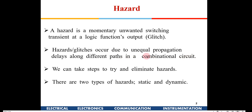Suppose an output is supposed to remain zero for a certain input combination. The input combination changes and the output needs to remain zero for that new combination also. But because signals follow different paths with unequal propagation delays, the output could momentarily go to one and come back to zero. That is known as a hazard or glitch.